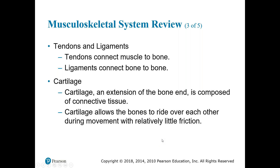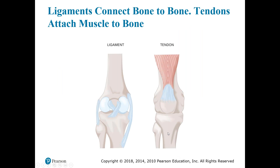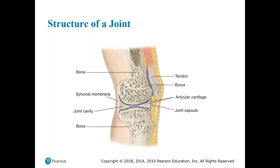Cartilage allows the bones to ride over each other with movement and little friction. We can see the ligaments connecting bone to bone and the tendons attaching muscle to bone. When doing our patient assessment, whether the injury involves a ligament or a tendon doesn't really change our treatment — we're still going to stabilize in place, provide pain control, and conduct our isolated trauma assessment. Joints have the tendency to slip that cartilage and damage those tendons, which results in a dislocation, which we will discuss shortly.